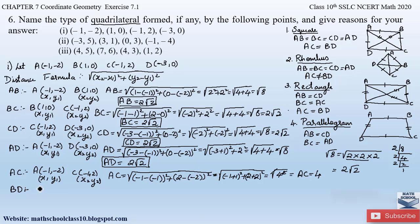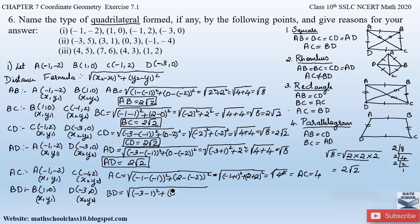Similarly, let us find diagonal BD. Assuming B as (x₁, y₁) = (1, 0) and D as (x₂, y₂) = (−3, 0): BD = √[(−3 − 1)² + (0 − 0)²] = √[(−4)² + 0] = √16 = 4. So diagonal BD is also equal to 4.